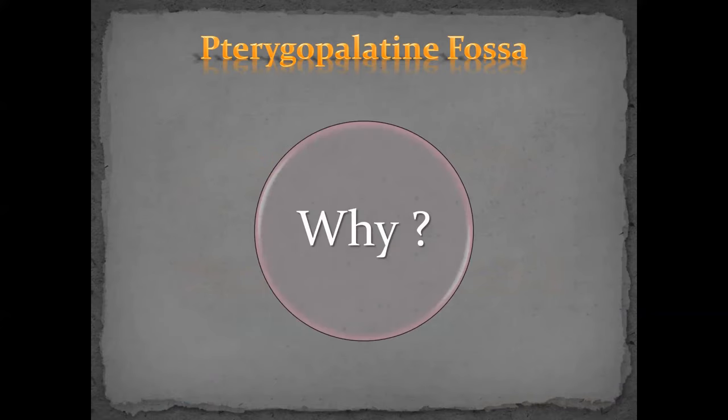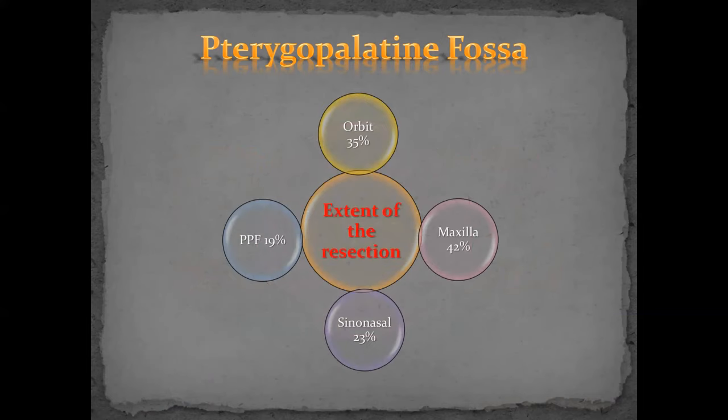As you see on this graph, why is it important? Any tumor in the sinonasal cavity — whether it's an orbital tumor or sinonasal tumor — you can see those percentages: 35% of orbital tumors involve the pterygopalatine fossa, 42% of maxillary tumors, 23% sinonasal, and the primary tumor of the pterygopalatine fossa itself is 19%. It was named after the pterygopalatine ganglion within it.